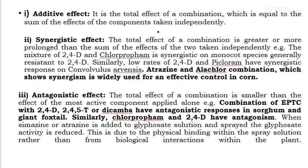Atrazine and alachlor combination shows synergism and is widely used for effective control in corn. The third is the antagonistic effect — the total effect of the combination is smaller than the effect of the most active component applied alone. For example, combinations of ETC with 2,4-D, 2,4,5-T, or dicamba have antagonistic responses in sorghum and giant foxtail. Similarly, chloroprofen and 2,4-D show antagonism. When simazine or atrazine is added to a glyphosate solution and sprayed, the glyphosate activity is reduced due to physical binding within the spray solution rather than biological interaction within the plant.